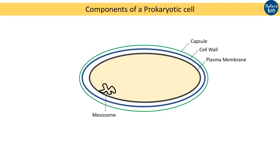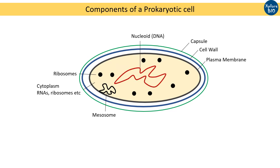Inside the cell, a jelly-like substance known as cytoplasm is present. It contains other components like DNA, different types of RNAs, ribosomes, proteins, ions, food particles, etc. A central membrane-less region known as the nucleoid is the place where DNA is localized. Additional circular DNA known as plasmid provides additional advantages to the prokaryote, like protection from antibiotics.